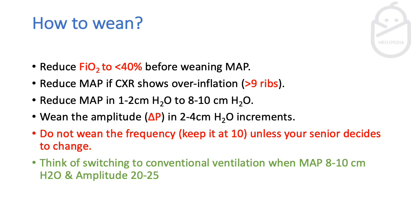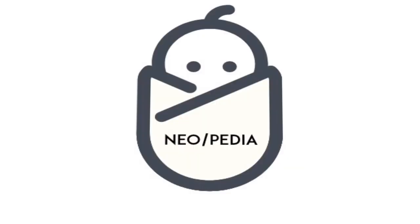You can wean the amplitude by two to four centimeters of water if you have good CO2 clearance. Keep frequency at 10 unless your senior decides to change it. Consider switching to conventional ventilation when you reach a MAP of 8 to 10 centimeters and an amplitude of 20 to 25. Thank you very much — please feel free to ask any questions in the comment section.